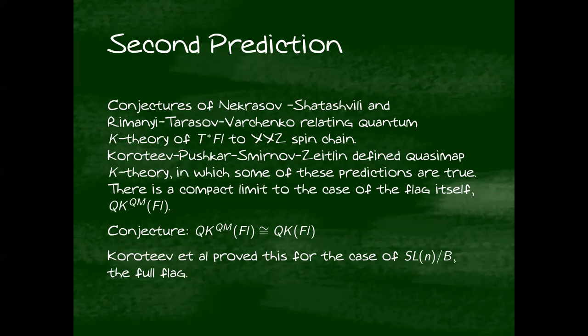This is using a different moduli space than Kontsevich's and a different method for deforming the K-ring. Their theory has a compact limit to the case of the flag itself, not just the cotangent bundle. And they define this ring I'm calling QK^{QM}. But again, this is a quantum K-ring in this quasi-map language. So it's unknown whether this corresponds to the stable map quantum K-ring that people are initially interested in or not. They were able to prove it for the case of the full flag, but it wasn't known for partial flags. I do not have the time to explain all of this stuff about quantum integrable systems to you, nor do I fully understand it. So I'll give you the description of the quasi-map ring without saying too much about where it comes from.